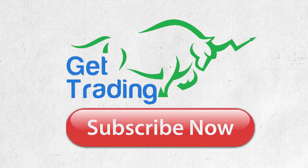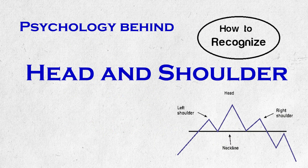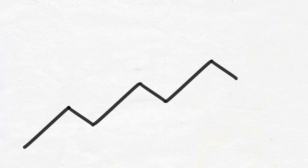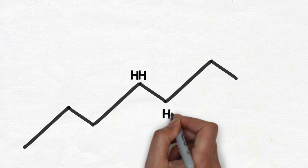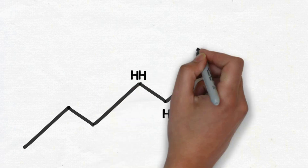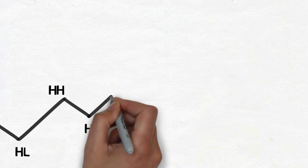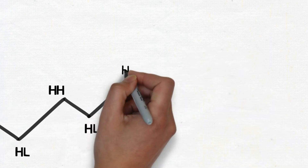Let us first see what is a head and shoulder pattern. You will also know how to recognize a chart pattern after seeing this. In an uptrend — a proper uptrend — every swing is forming higher highs and higher lows. The price will form the continuation swing with another set of higher highs.